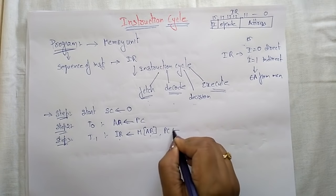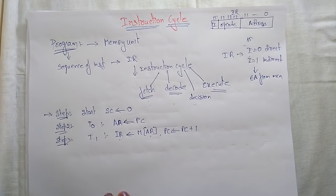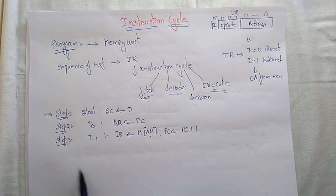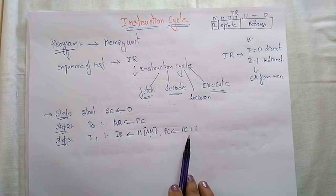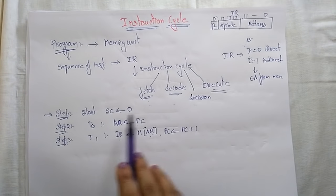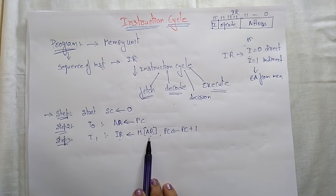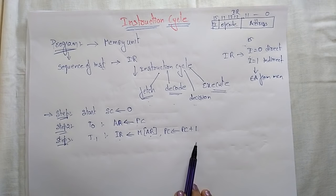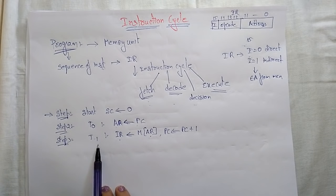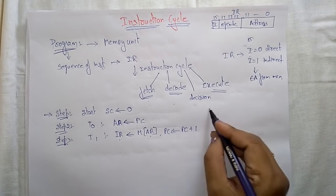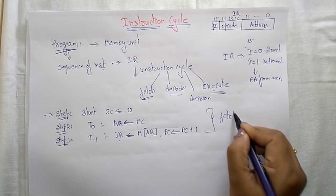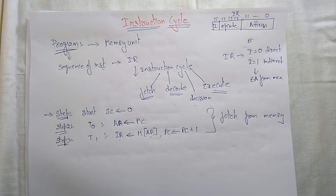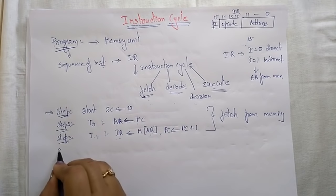After memory content is placed in the instruction register, the instruction register holds the opcode — the operation to be performed. The program counter will be incremented by 1, meaning the next instruction to be executed will be stored in the program counter. So whenever the operation is over, it takes the instruction from the incremented location. During T0 and T1, we are just fetching the data from memory — this is the fetch cycle.